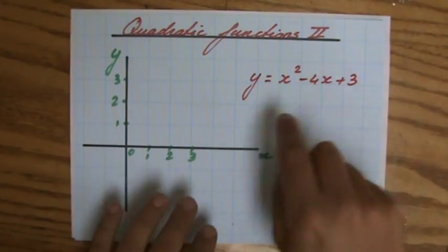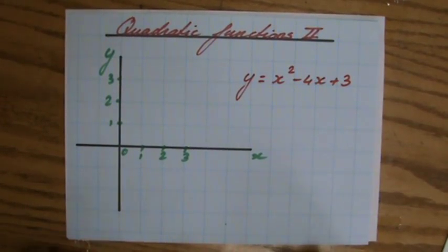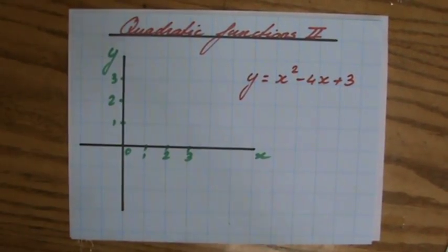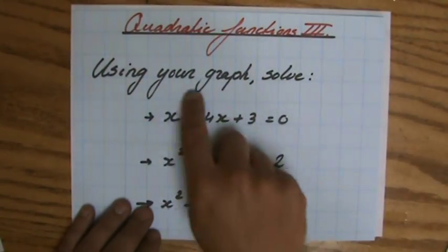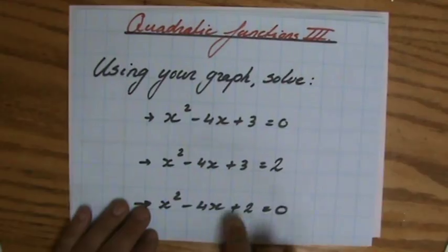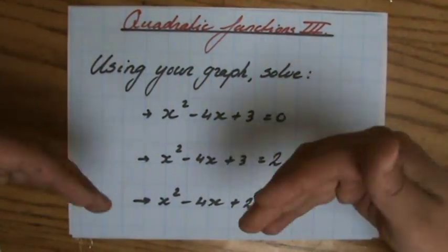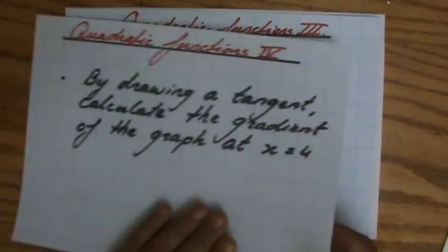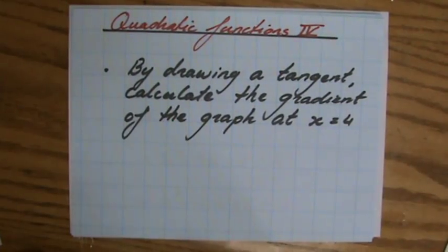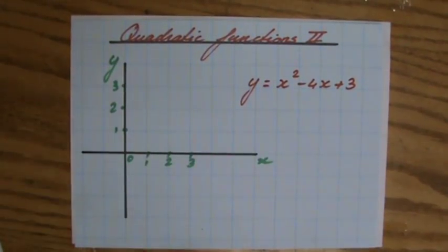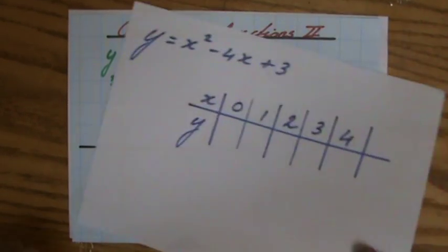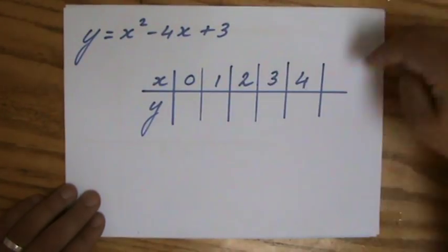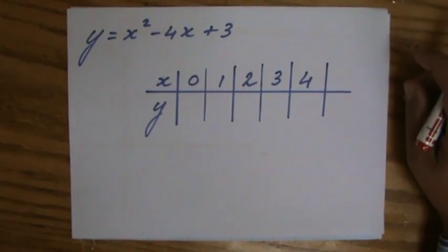We're going to now graph this parabola in this video, and then in the next video, we are going to use our graph to solve three equations. And then in the video afterwards, we're going to draw a tangent and calculate the gradient at a particular point. That is for later. First, we have to graph x squared minus 4x plus 3. So a table of values, and I've already decided upon some numbers for your x.